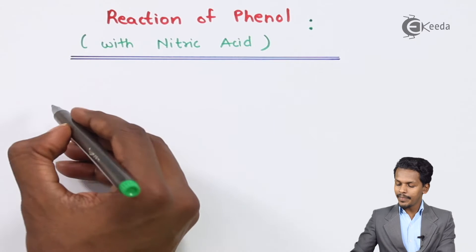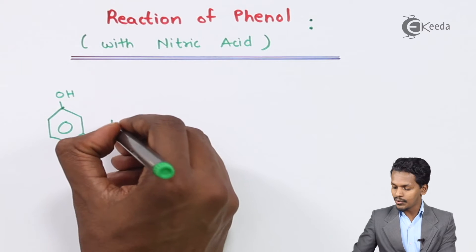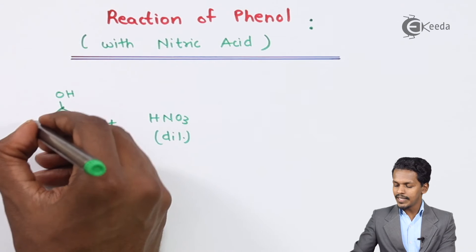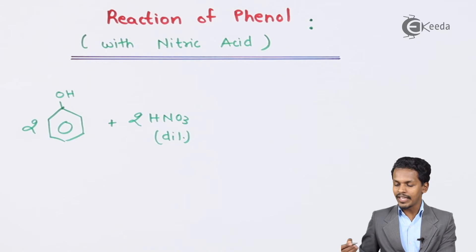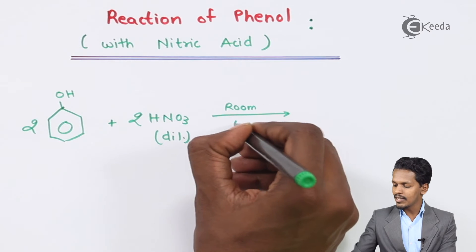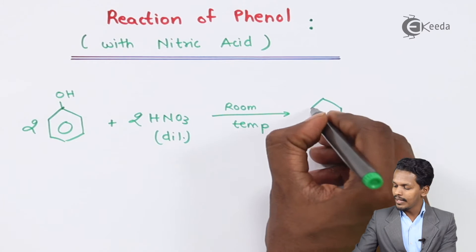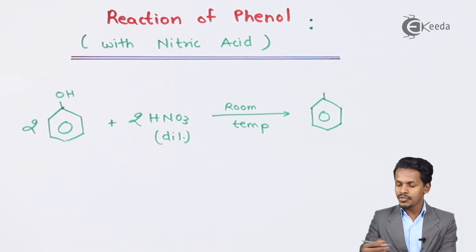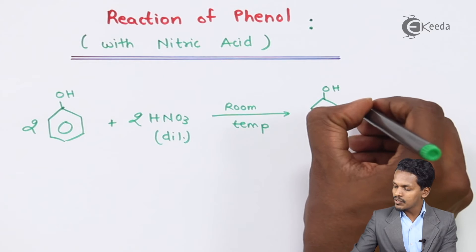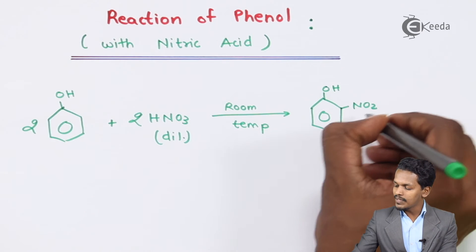Suppose if I am treating phenol with diluted HNO3 — nitric acid — in this case basically two moles of phenol react with two moles of HNO3 at room temperature. The reaction occurs such that we get a mixture of products. There will be a substitution reaction where the OH remains as it is while one of the hydrogens on benzene is replaced by an NO2 group.